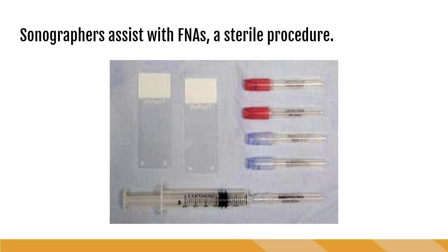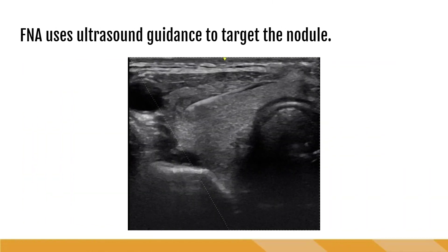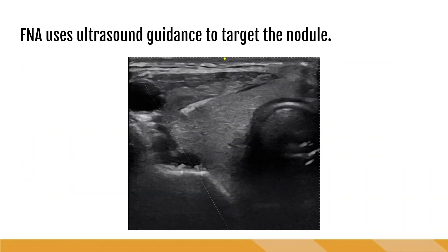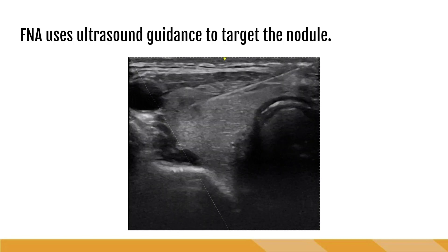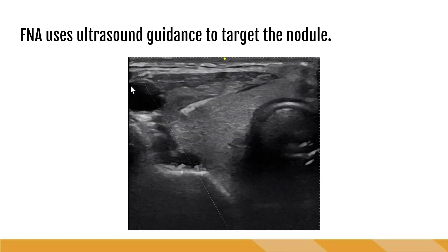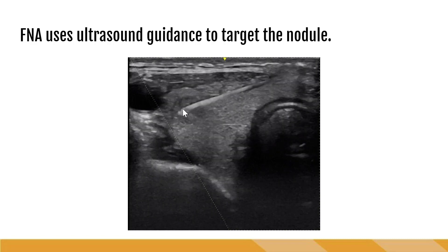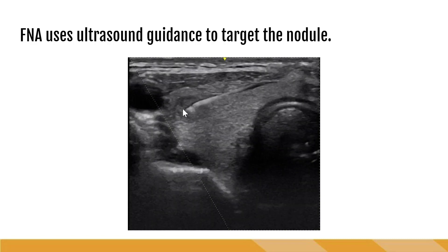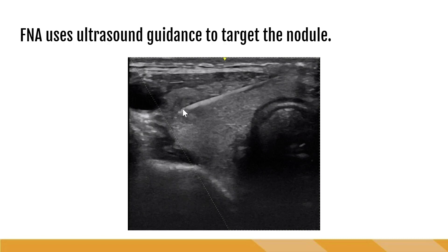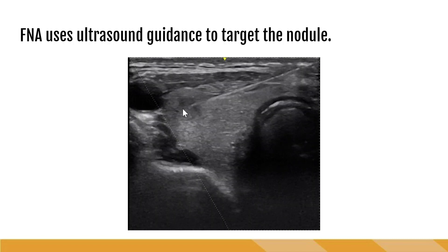Typically, a radiologist or another high-level provider will be the one to actually perform the FNA. Sonographers, after getting everything set up, typically run the machine, taking pictures while the provider holds the transducer and directs the needle placement. Here we can see a video of a needle going directly into the nodule — this is the targeted area. They watch the needle come in, go into that nodule, and then move it around a little bit, trying to grab whatever cells they can.